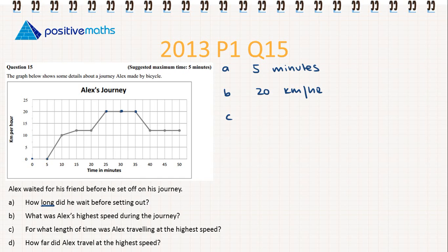So then part C, for what length of time was Alex traveling at the highest speed? We can see he was traveling at the highest speed between 25 minutes and up to 35 minutes. So he was traveling at the highest speed for 10 minutes.